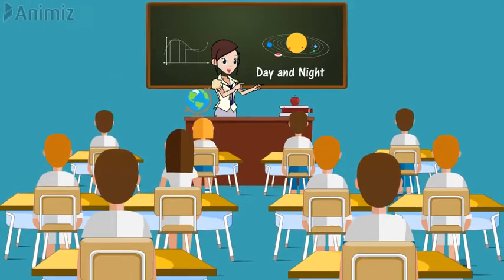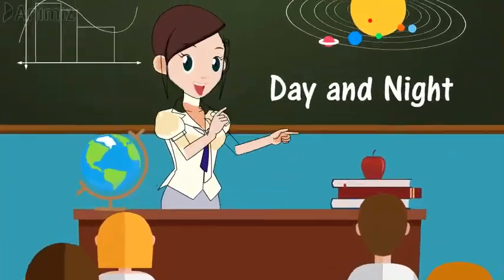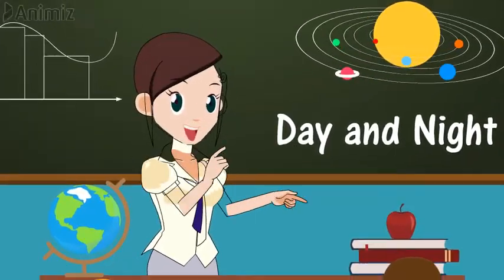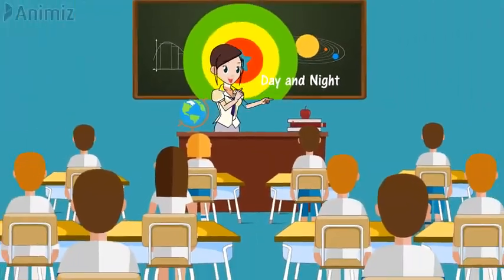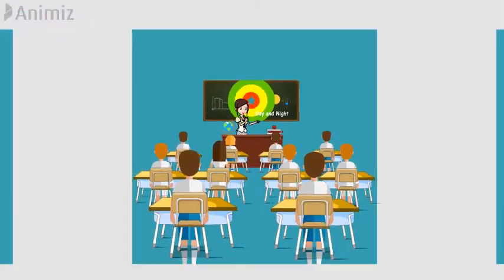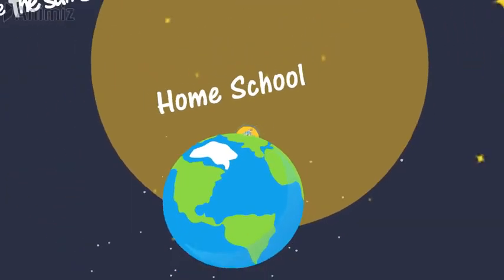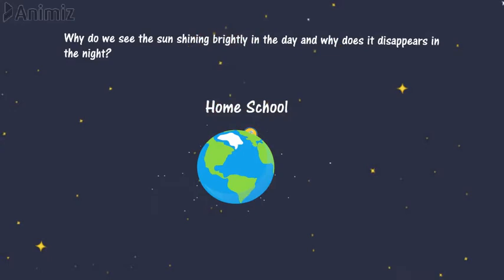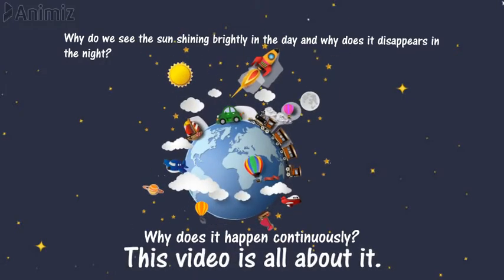causes, that is day and night. So have you ever wondered what causes day and night? Why do we see the Sun shining brightly in the day and why does it disappear at night? Also, why does it happen continuously? So children, this video is all about it.